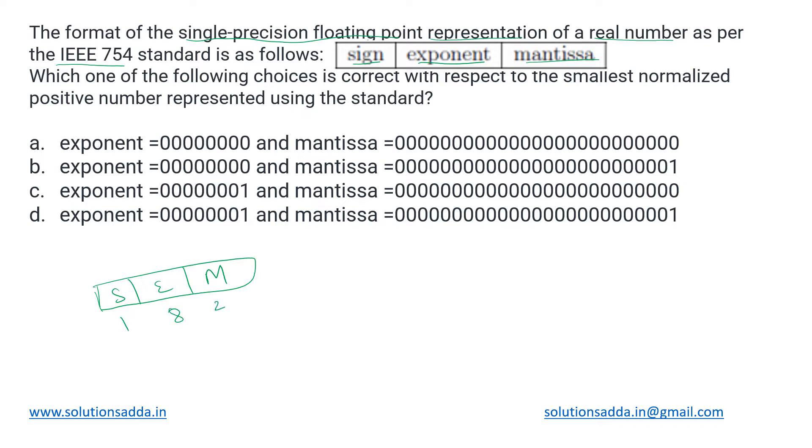The remaining 23 for mantissa. This is single precision, that's why it is 32-bit. Otherwise in double precision we go for 64 bits. Now for this representation, they are asking which of the following choices is correct with respect to the smallest normalized positive number represented using the standard.